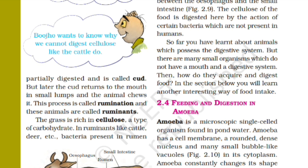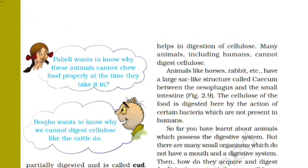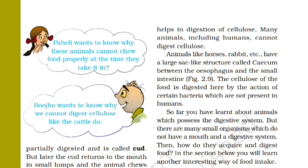In ruminants like cattle and deer, bacteria present in the rumen help in the digestion of cellulose. Many animals including humans cannot digest cellulose.